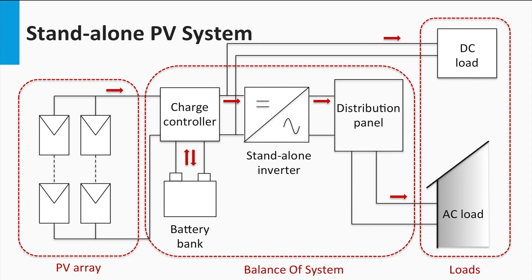Here a typical off-grid or stand-alone PV system is shown. Consequently, the inverter is a stand-alone inverter. In this case, the PV system is stand-alone and the load can only depend on the PV system for power. So the inverter that supplies AC power to the load has to appear as a voltage source with a stable voltage and frequency, supplying power at 230 volts AC or 110 volts AC, or as is the voltage standard at the location.